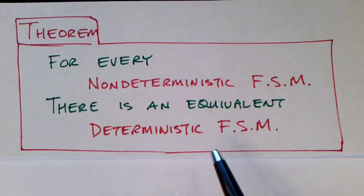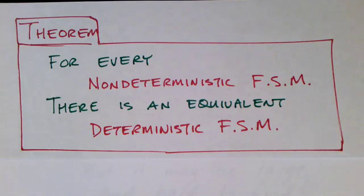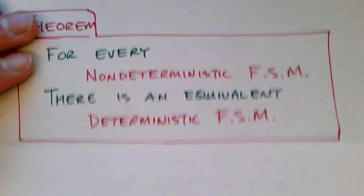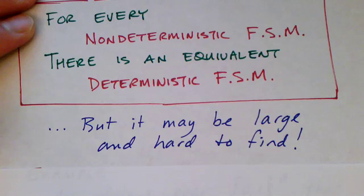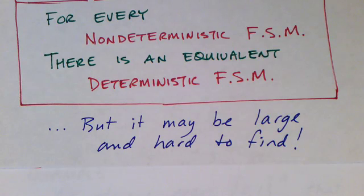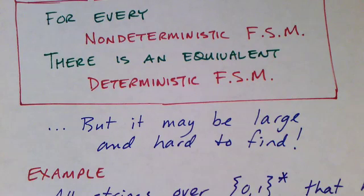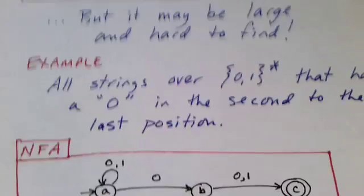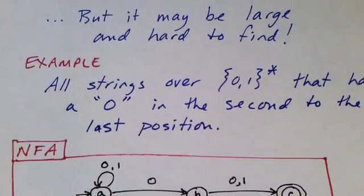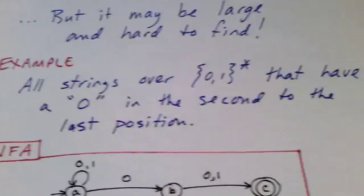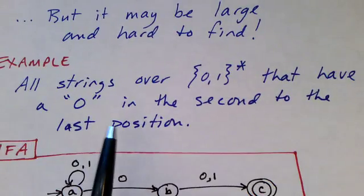So you don't get any additional power from non-determinism. For every non-deterministic finite state machine, there's an equivalent deterministic machine, but it might be very large and it might be kind of hard to find. Let's take a look at an example. We'd like to look at the set of all strings that have a zero in the second to the last position.